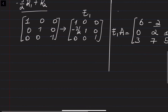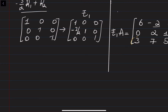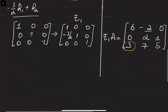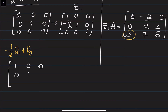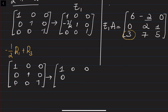Next we need to eliminate the 3. To do this, multiply the first row by -1/2 and add it to the third one. Again, we apply this operation to the identity matrix. The result is E2 = [[1, 0, 0], [0, 1, 0], [-1/2, 0, 1]]. That's our second elementary matrix, E2.